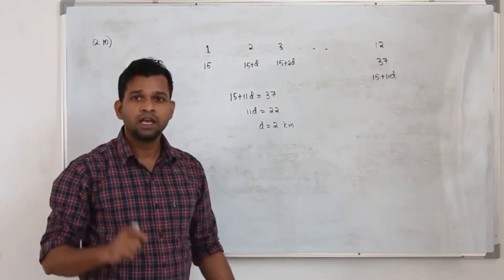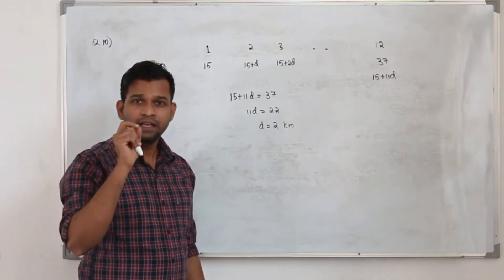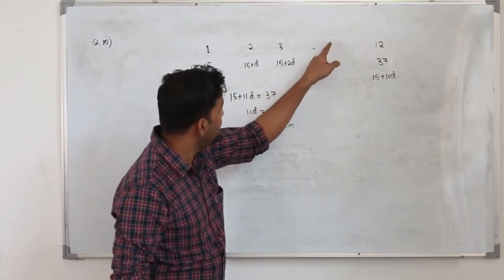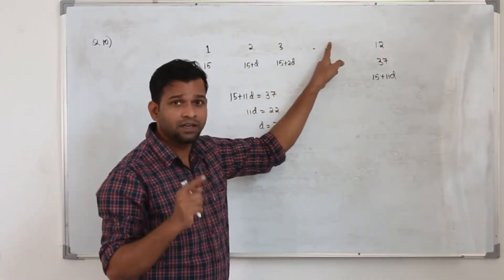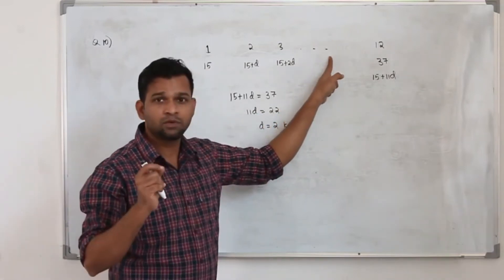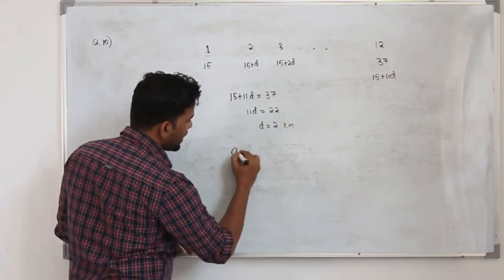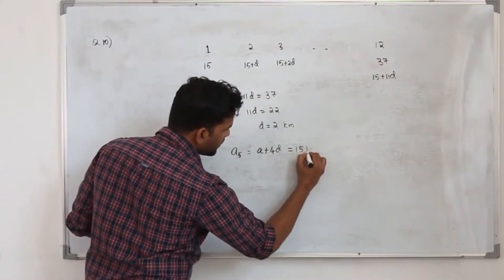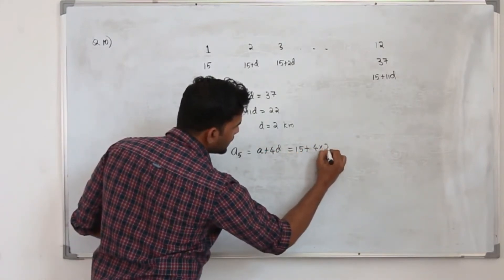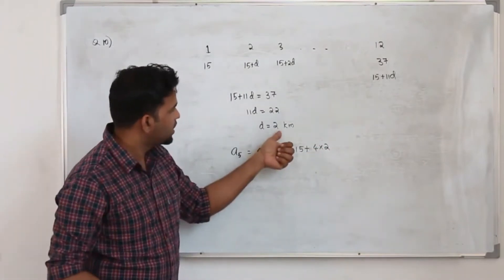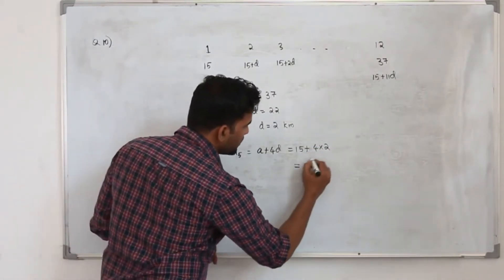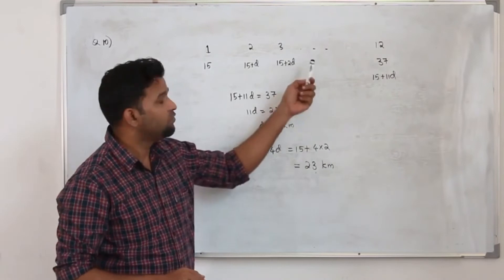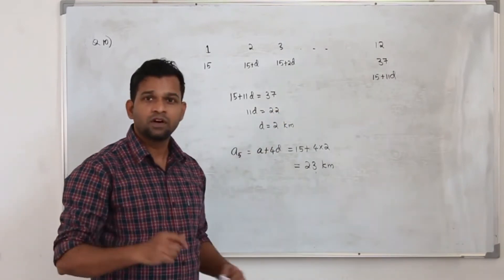D is 2 km. The question asks for the distance in week 5, which is the 5th term of this arithmetic sequence. The 5th term is A plus 4D, so it's 15 plus 4 times 2, which equals 23 km. That means he runs 23 km in week 5. That's the answer for part A.